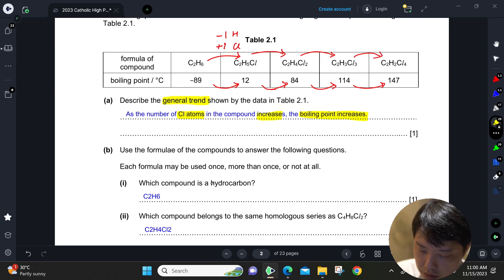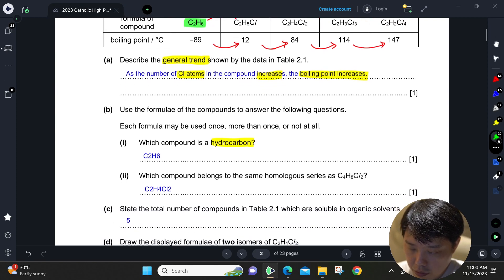Hydrocarbon means that you basically just have carbon and hydrogen. I think the only one is C2H6.